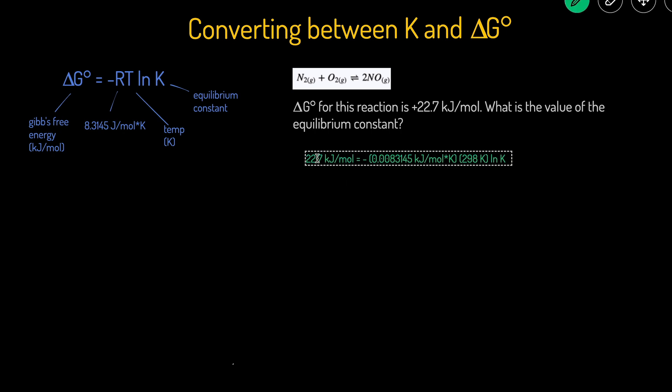First, divide 22.7 by (-0.0083145 × 298), which equals ln K. To get rid of the natural log, take e to the power of both sides: e raised to this number equals K.